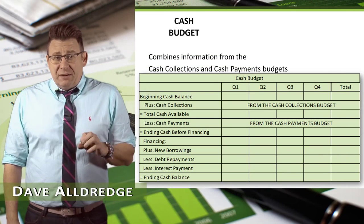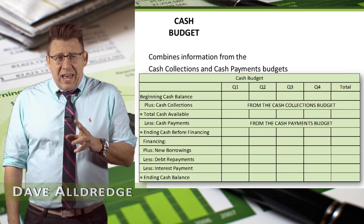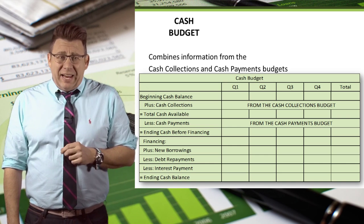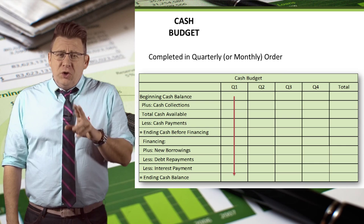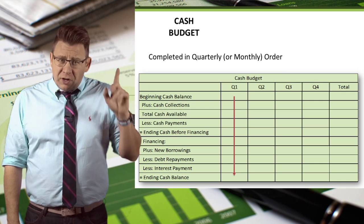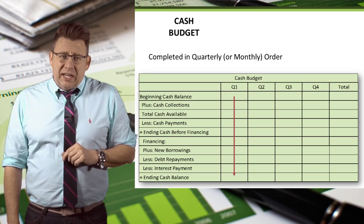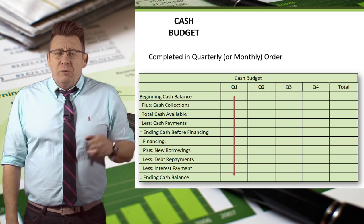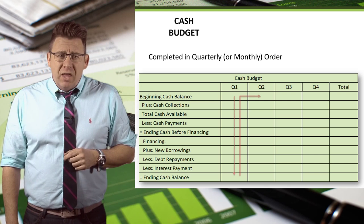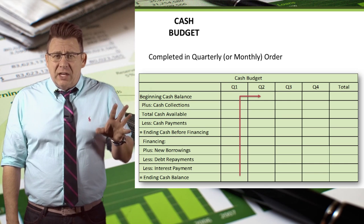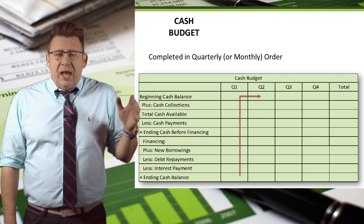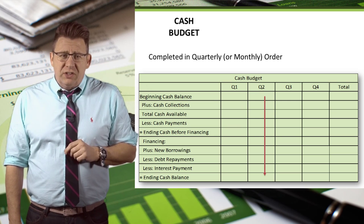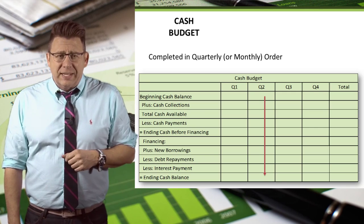The cash budget combines data from the cash collections budget and the cash payments budget. This is why it's sometimes called the combined cash budget. This is one of the few budgets that we complete vertically rather than horizontally, meaning we complete one month or quarter completely before moving on to the next, because the ending balance for one quarter becomes the beginning balance in the next.